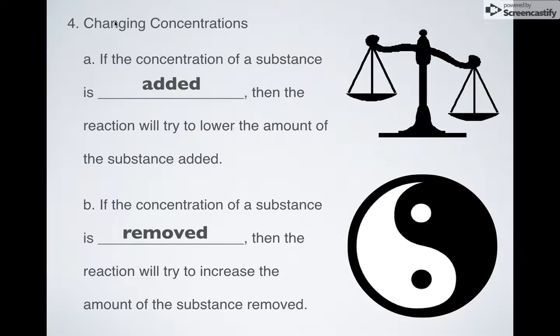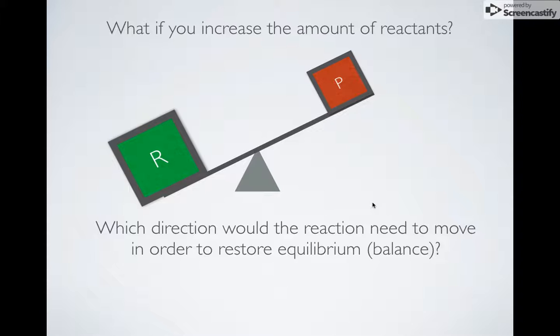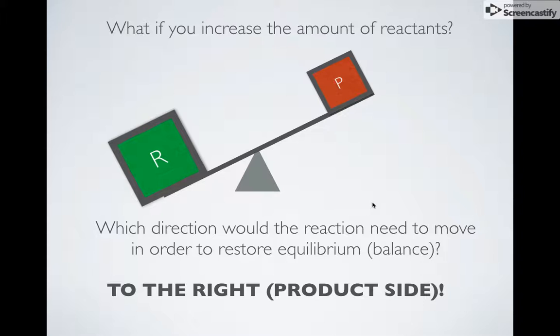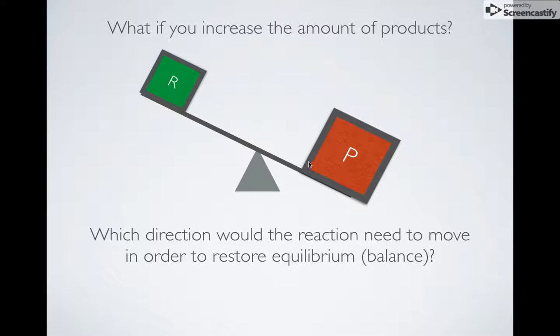I like to think of it as a seesaw, where R stands for reactants and P stands for products. What happens if we increase the amount of reactants on the seesaw? Which direction will the chemical reaction need to move — left or right — in order to restore equilibrium? It's going to have to move to the right; we're going to need to make more products in order to balance that. What about the opposite? If I increase the products, I'm going to need to make more reactants in order to balance that, and so it would move to the left.